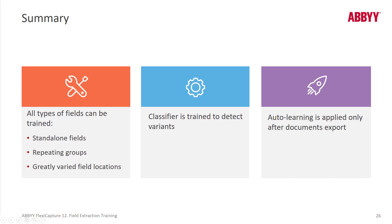Machine learning training is applicable to standalone fields as well as tables and repeating groups. We can also use classification training batches to detect variants. Once in production, the software watches verification operators' actions, and if they make a positional change, that triggers a training event — which usually happens after the export workflow, but could also happen right after verification. That's a critically important capability, so that your verification operators' actions help make the system smarter and work better.